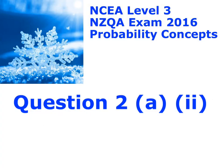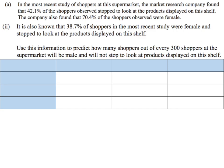Here is question 2A part 2. Here's the information that we've been given. At the top we were told that 42.1% of shoppers stopped to look at the displays and that 70.4% of them were female. Then in part 2 we were told that 38.7% of the shoppers were female and stopped to look at the products on display.